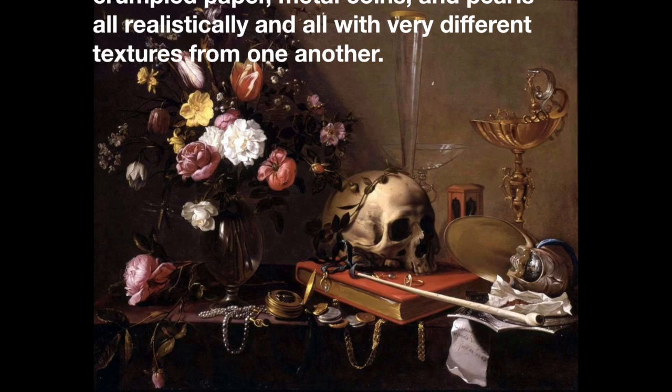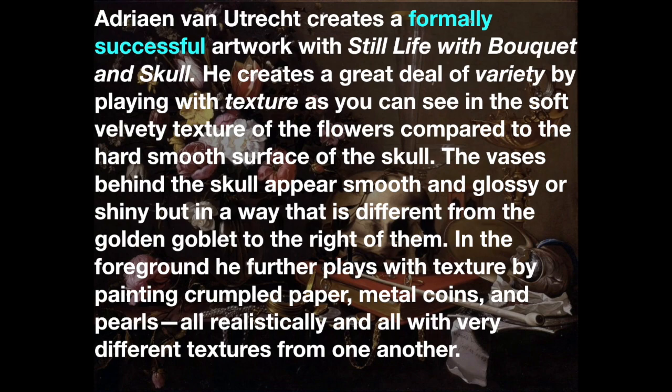Looking back at that judgment, you'll see that early on it is established how the work is being evaluated — it's formally successful, meaning we're using criteria rooted in the elements and principles of art. Then the claim is made that there's a great deal of variety, and I talk about texture, identifying where and how the textures are different. I could have gone on to discuss variety of colors and forms, but in this brief judgment there is a well-defended argument that the artwork succeeds because it does variety very well.